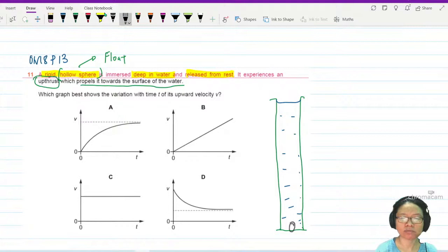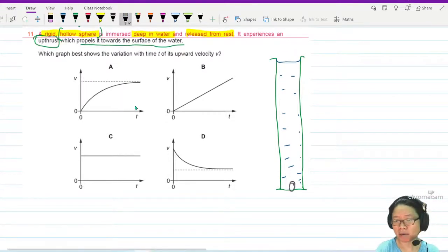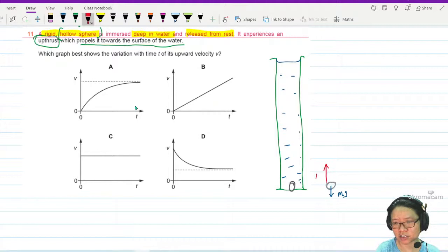At the point of letting go, my hollow sphere will have small weight because it's pretty much not very heavy, but very large uptrust. So I'm going to draw uptrust here. Very large, large uptrust.